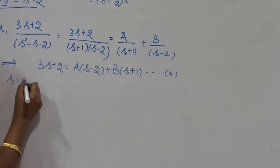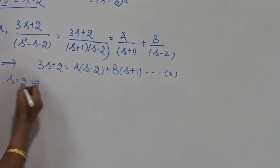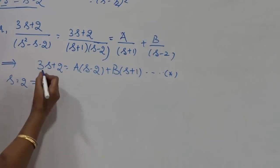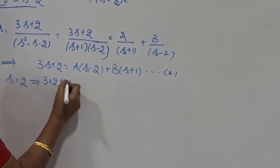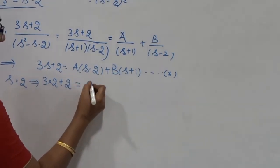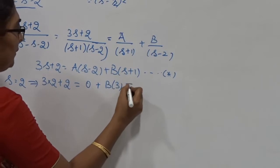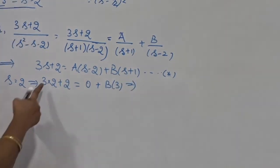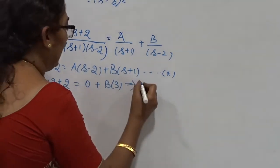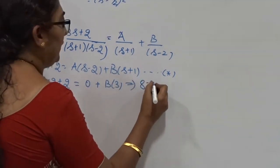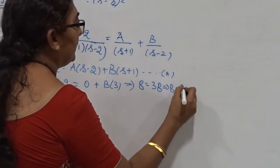Put s = 2. Once you put s = 2, the A term becomes 0 but B is not zero. On the left side: 3 times 2 is 6 plus 2 equals 8. On the right side: B times (2 + 1) = 3B. Therefore 8 = 3B, which implies B = 8/3.